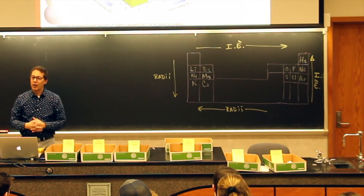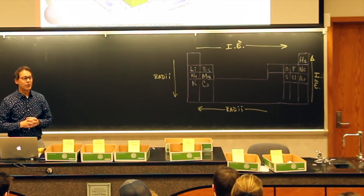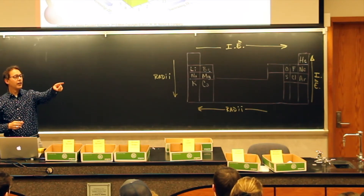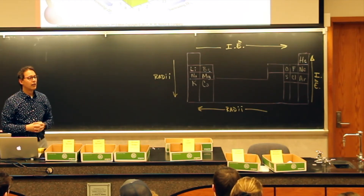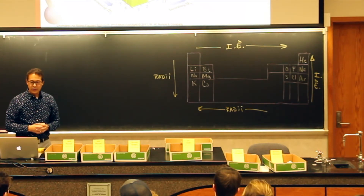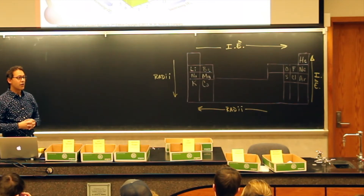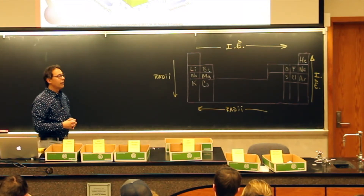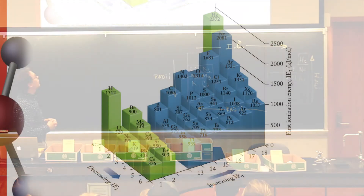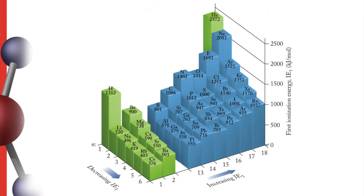Another observation: elements with a smaller number of electrons are harder to remove electrons from. For example, hydrogen and helium have very few electrons, they're also very small, and it's going to be hard to pull those electrons away. Atoms with lots of electrons are generally a little bit easier.